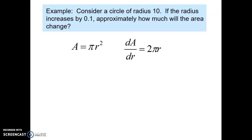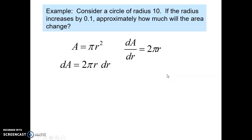We were talking about this example of a circle where the radius was increasing by a very small change. We came up with the derivative of the area of the circle with respect to R. Then we used our process of differentials, saying that if I have a very small change in R, I can think of this as a fraction and separate these two pieces, thinking of each piece as a differential.